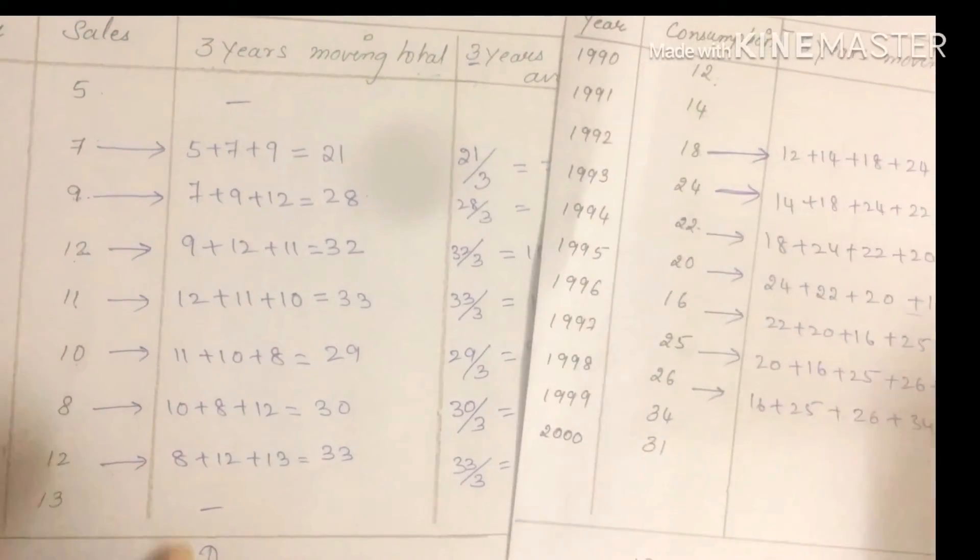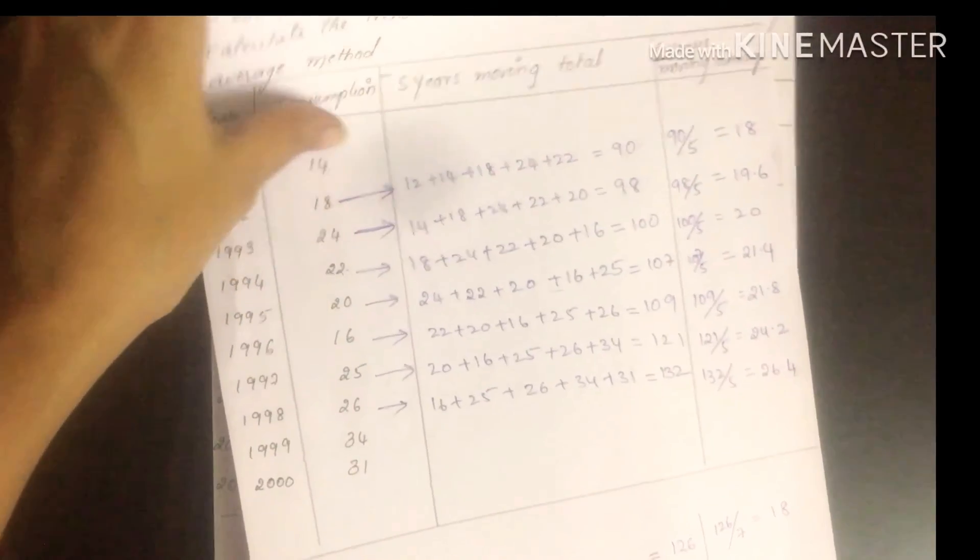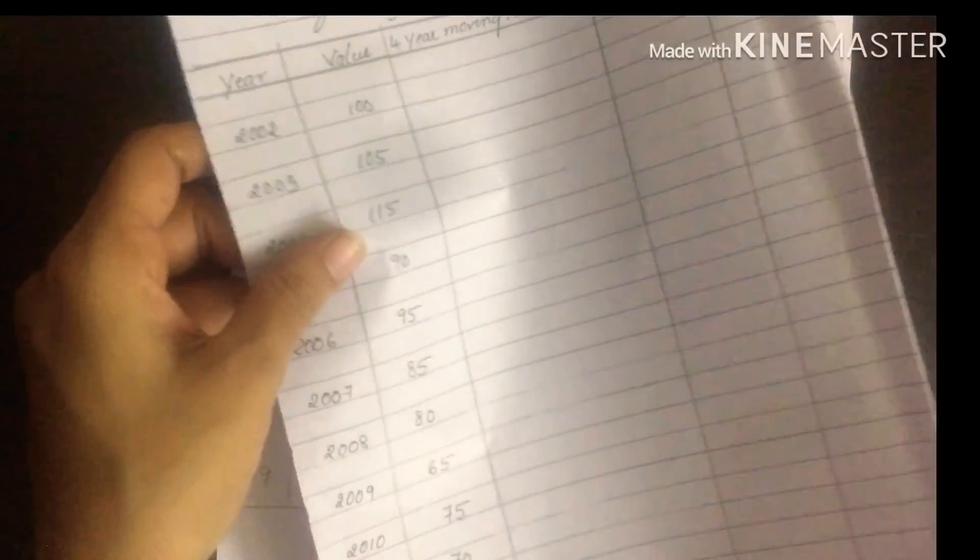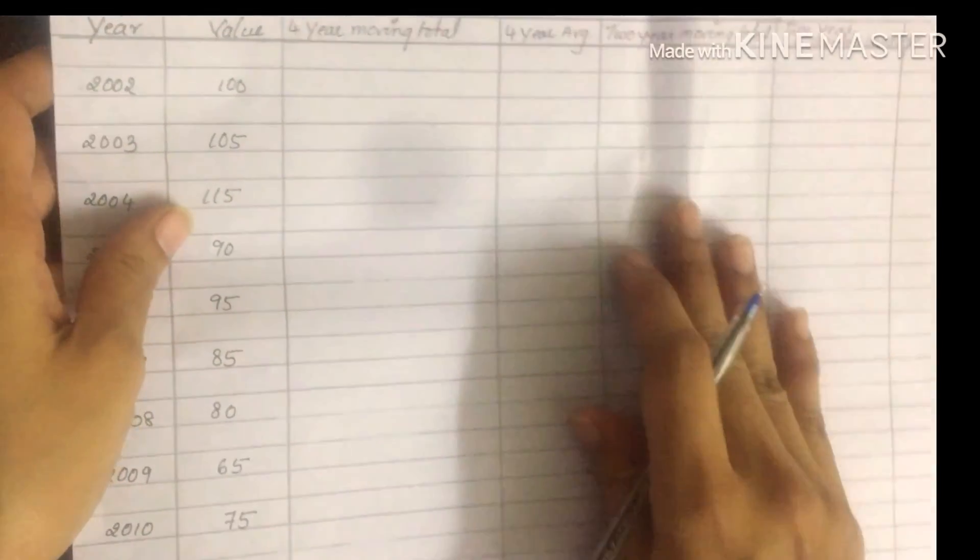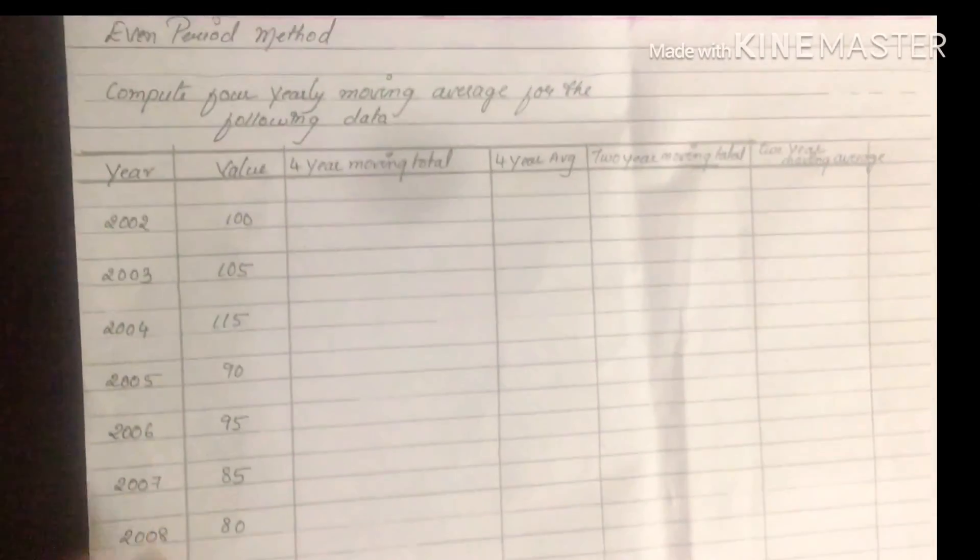So this is a simple problem related to moving average method. Next, in the next video, I am going to explain the even period method - that is, compute 4 years moving average. Thank you.